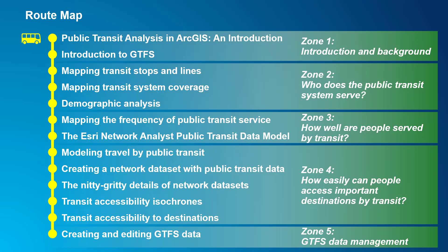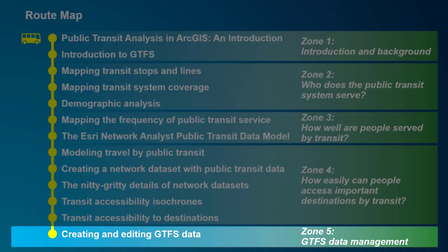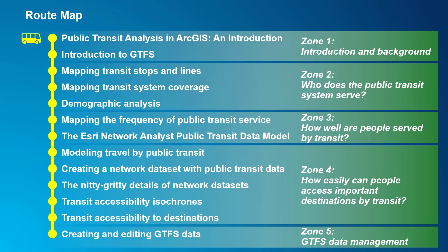We'll progress from simply visualizing the locations of public transit stops and lines in a map, to mapping the transit system coverage, to mapping the frequency of service available, to modeling travel by public transit in a network, to calculating job accessibility. We'll also talk a little bit about tools to create and edit GTFS datasets in ArcGIS. For the most part, the topics in this series build off one another, so you should watch the videos in order. I'll show this system map at the beginning of each video so you can keep track of where you are.